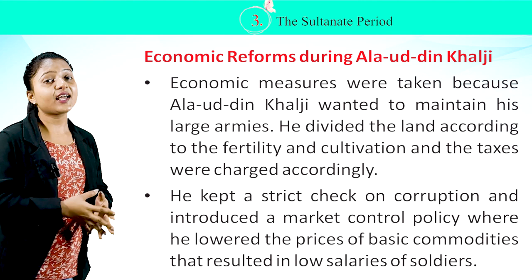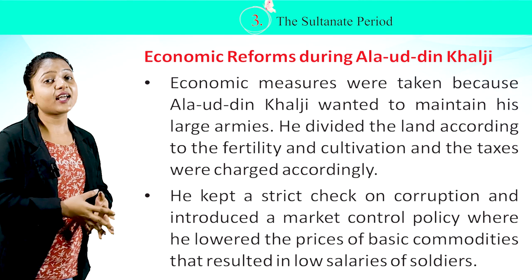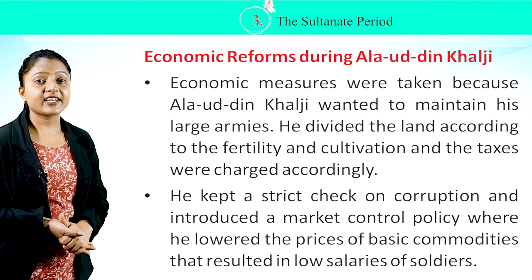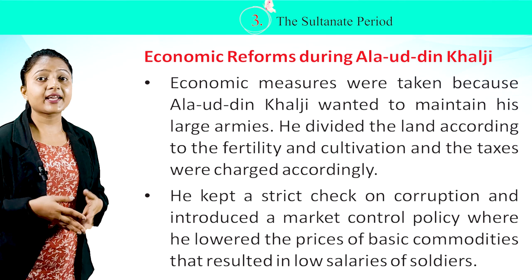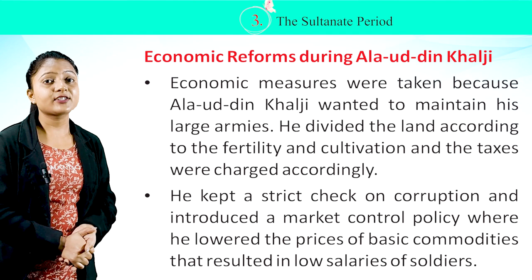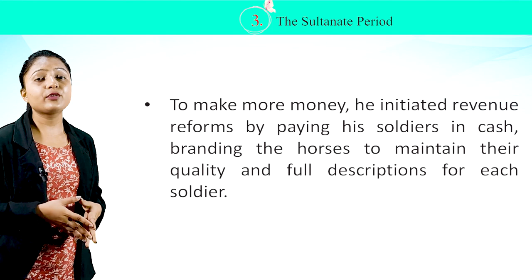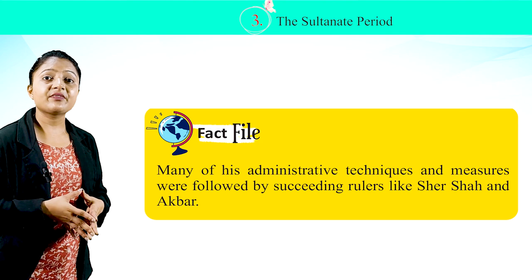Economic reforms during Alauddin Khalji: Economic measures were taken because he wanted to maintain his large armies. He divided land according to fertility and cultivation and charged taxes accordingly. He kept a strict check on corruption and introduced a market control policy that lowered the prices of basic commodities, resulting in lower salaries for soldiers. He initiated revenue reforms by paying soldiers in cash, branding horses to maintain their quality, and keeping full descriptions of each soldier. Many of these administrative techniques were followed by succeeding rulers like Sher Shah and Akbar.